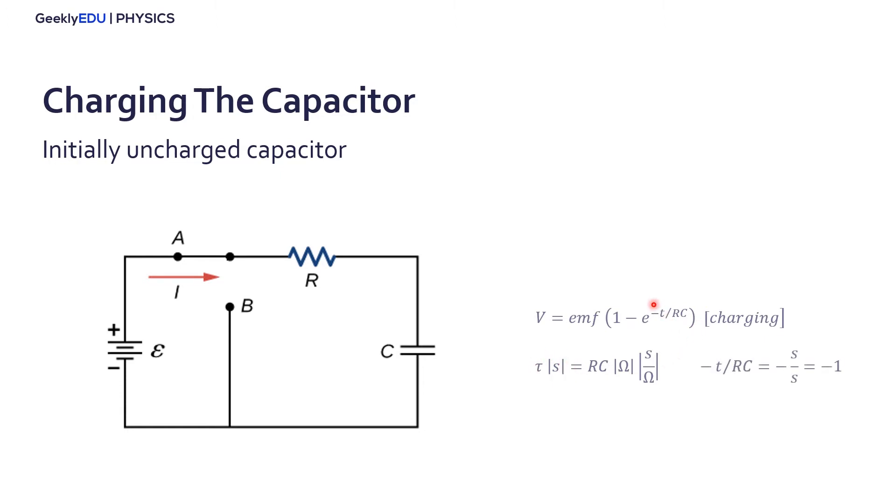T over RC is actually seconds over seconds. So in this case, it's dimensionless. Our equation then becomes something like this, and we calculate that the voltage for a charging capacitor is 0.632 times the EMF when charging.